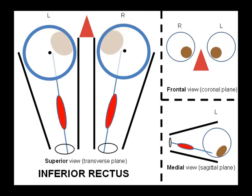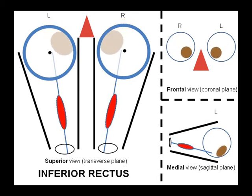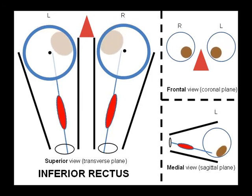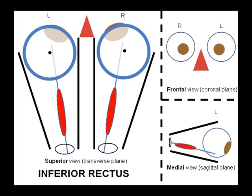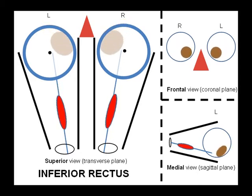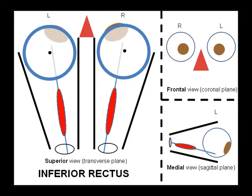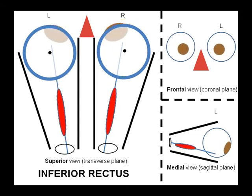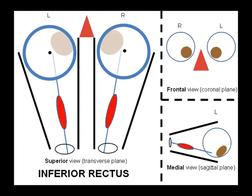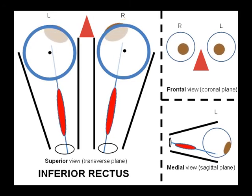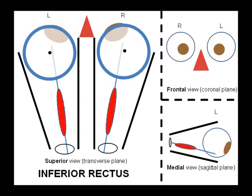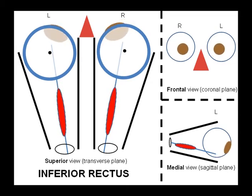Inferior rectus has a similar activity to superior rectus but causes depression of the eyeballs. On the superior view, the z-axis is depicted as the black dot, and we can see the tendon of inferior rectus passing medial to this, resulting in a component of adduction when inferior rectus contracts. Considering the medial view, inferior rectus pulls the inferior surface of the eyeball posteriorly, thus leading to depression of the pupil. On the frontal view, we can see that inferior rectus points the eyeballs towards the nose.